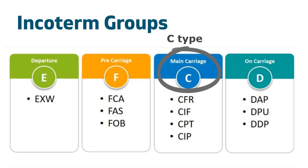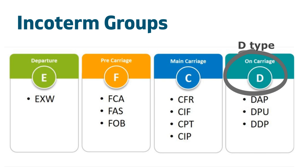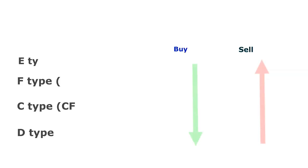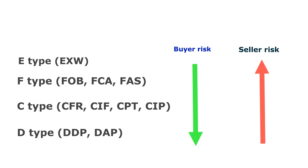The third group is the C-type, including CFR, CIF, CPT, and CIP. Here, the seller bears all costs and responsibility to the destination port. Then the risks are transferred to the buyer once the goods are loaded on the means of transport. The last group is D-type, including DDP and DAP. Here, the seller bears maximum responsibility for cost and risks. As you move from E to D-type, the buyer's risk and responsibility decreases, while the seller's risk, responsibility, and control increases.